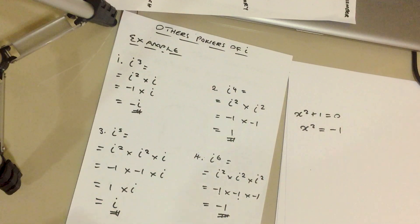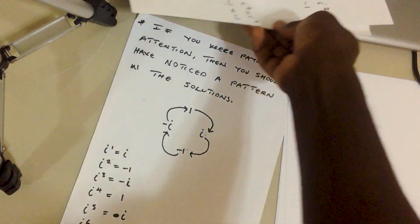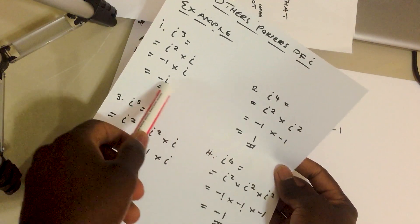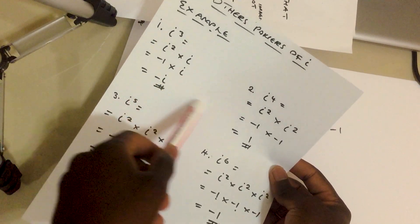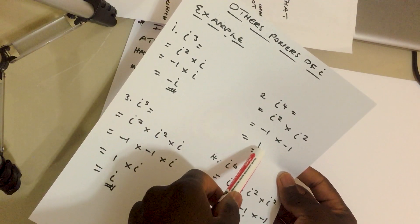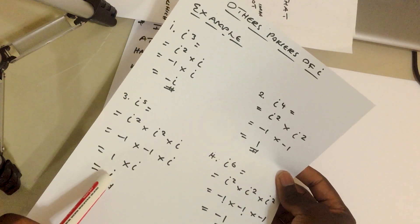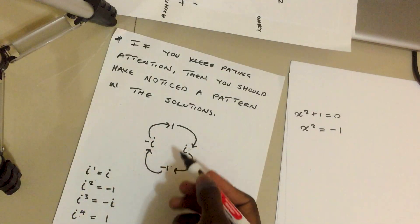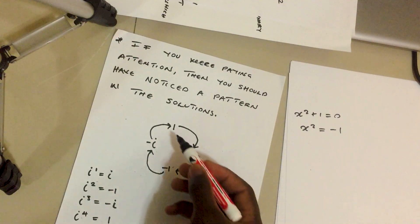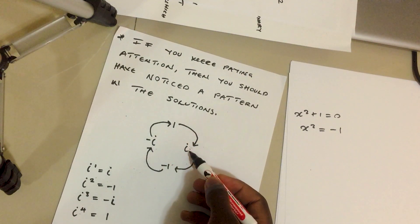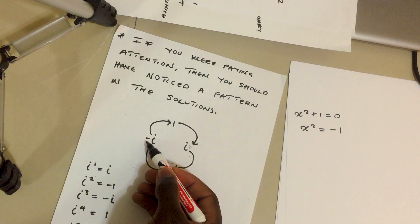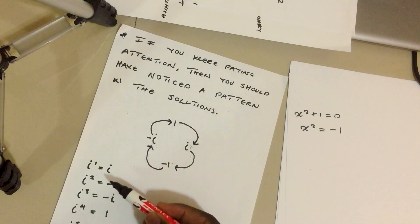This is how you tackle such questions. If you've noticed what we're doing here, there is a pattern. We have negative i, then positive one, then positive i, then we went back to negative one. After positive one came positive i, after positive i came negative one, and after negative one came negative i — the same cycle repeating.